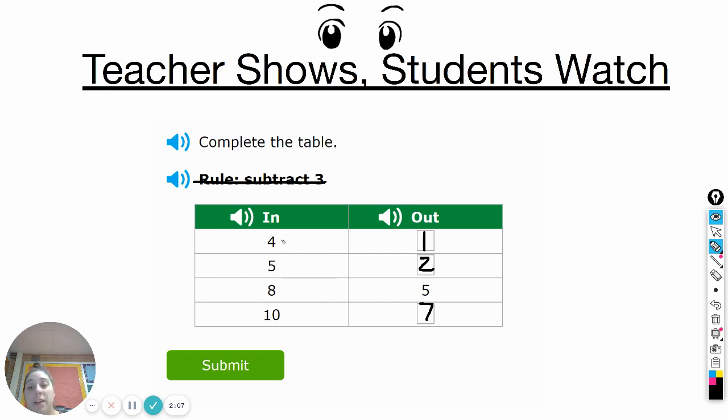You might also notice that it counts up four, five. So of course on the output side it goes one, two. The numbers are right next to each other because they're right next to each other when they go in. Eight and ten are two numbers apart just like five and seven are two numbers apart.